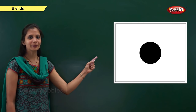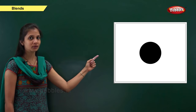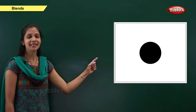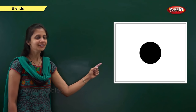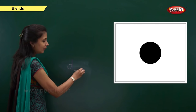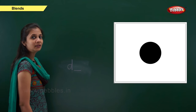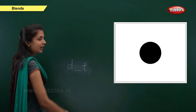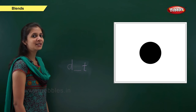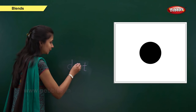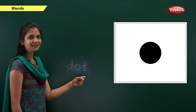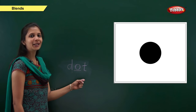Next one. Which picture is this? Yes, it is the picture of dot. What is the sound of this word? It is da or t — dot. When the sound is 'da', the letter is d. When the sound is 't', the letter is t. When the sound is 'o', the letter is o. So: d, o, t — dot.